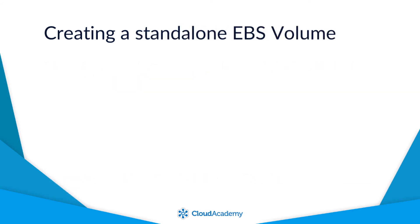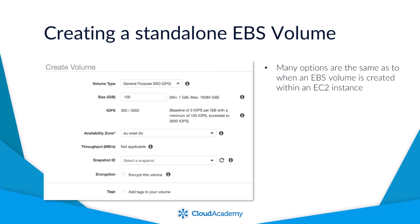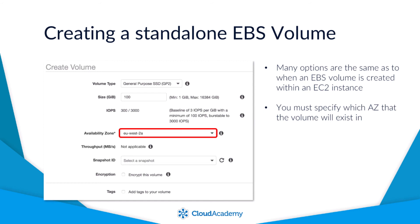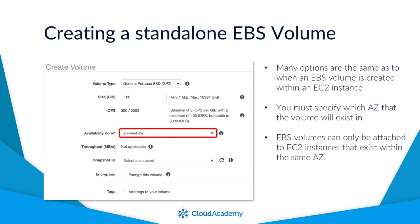You can also create the EBS volume as a standalone volume. By selecting the volume option under EBS from within the EC2 dashboard of the management console, you can create a new EBS volume where you will be presented with the following screen. Here you will have many of the same options; however, you can specify which availability zone the volume will exist in, allowing you to attach it to any EC2 instance within that same availability zone. Remember, EBS volumes can only be attached to EC2 instances that exist within the same availability zone.